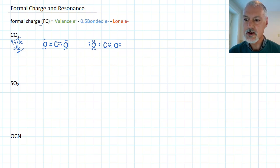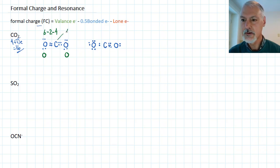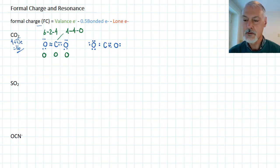What I'll do is determine the formal charge of each of these atoms. I do that by taking the valence electrons — in the case of oxygen there are six valence electrons — then subtract half the number of bonded electrons. In this case there are four bonded electrons, so half of that would be two, and there are four lone electrons. So this oxygen would have a formal charge of zero, and the other oxygen in exactly the same situation would also have a formal charge of zero. Carbon has four valence electrons; subtract half of the eight bonded electrons — that's four — and there are no lone pairs, so carbon also has a formal charge of zero. All atoms in this structure possess no formal charge.